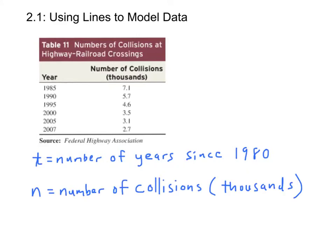Now, T is the independent variable, so T will be graphed on the horizontal axis. And N is the dependent variable, so that will be graphed on the vertical axis.